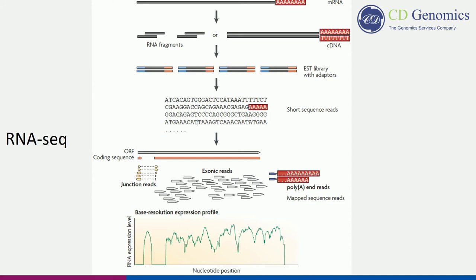RNA-seq has been a central approach to profiling mRNA populations. Traditional techniques such as microarrays have several limitations: first, they cannot detect low-abundance transcripts; second, the discovery of novel transcripts is limited. However, NGS platform-based RNA-seq can overcome these drawbacks. This methodology allows us to annotate transcripts including protein-encoding sequences and non-coding sequences, to determine the transcriptional structure of genes, and to quantify the expression level of transcripts under specific conditions.